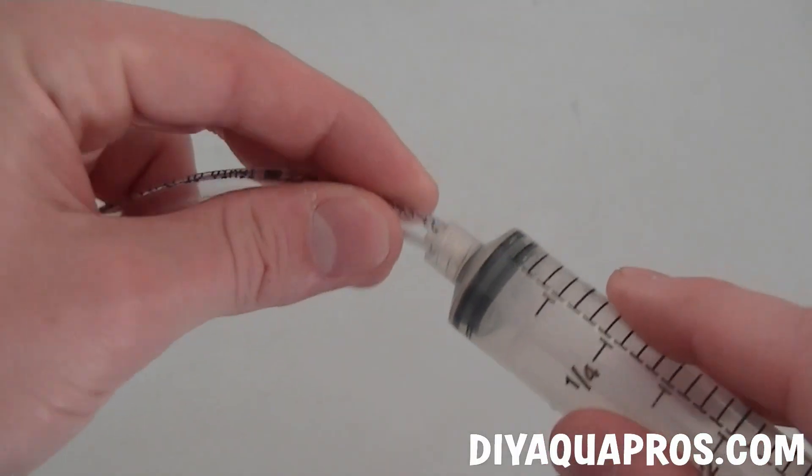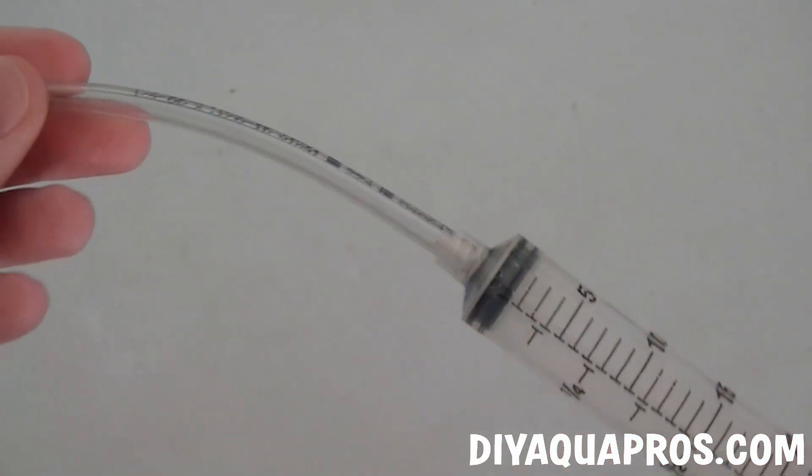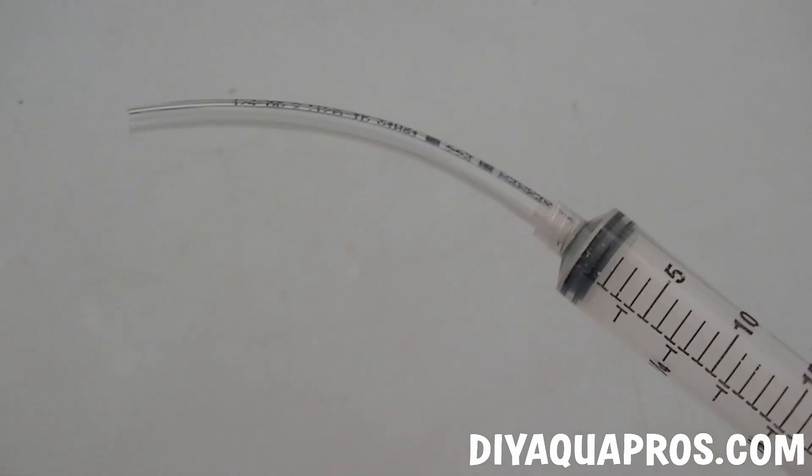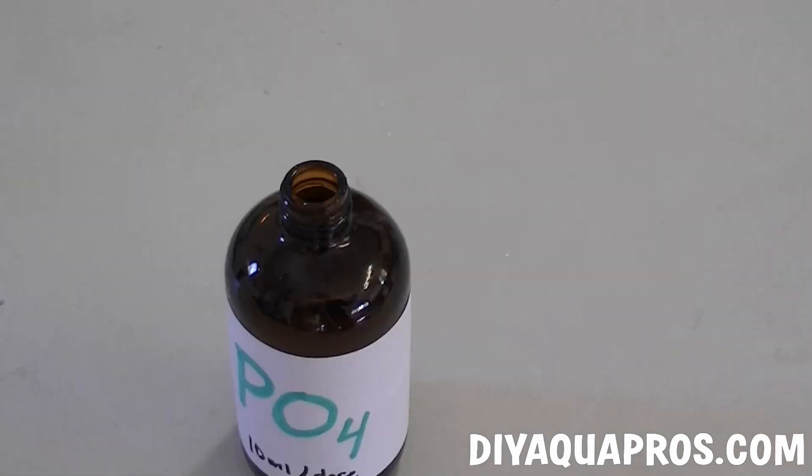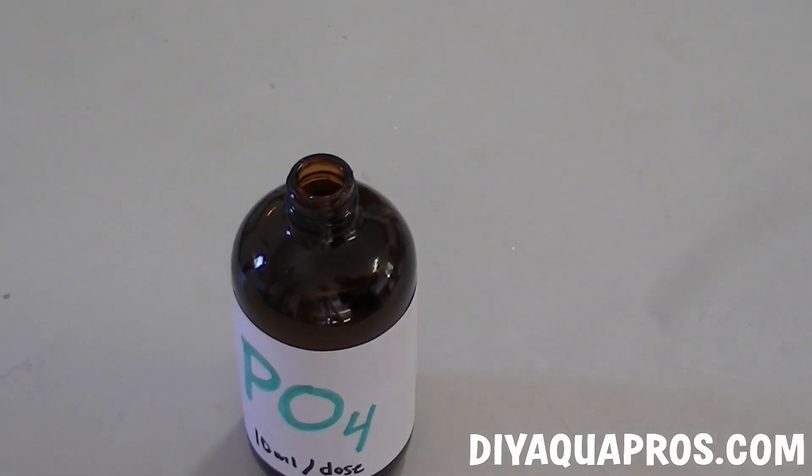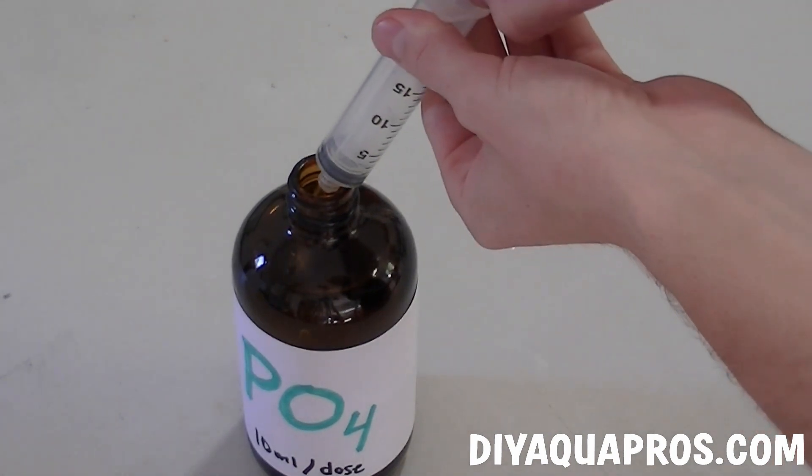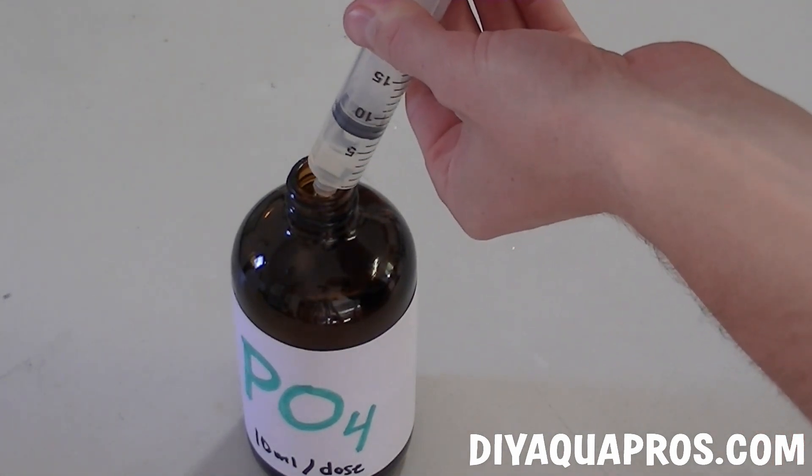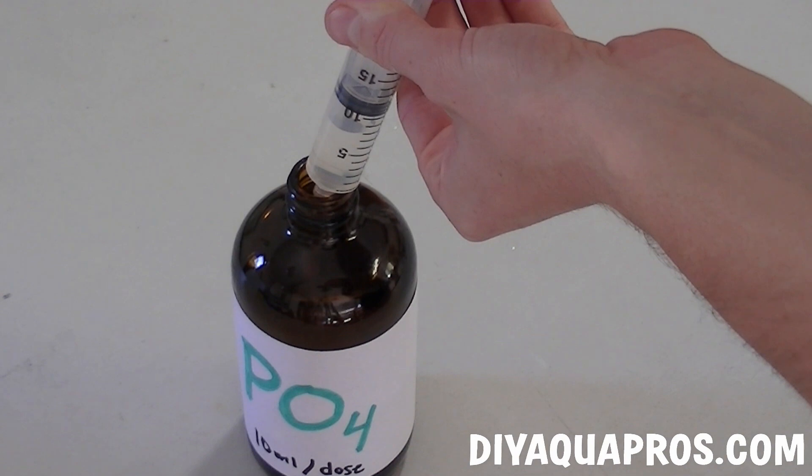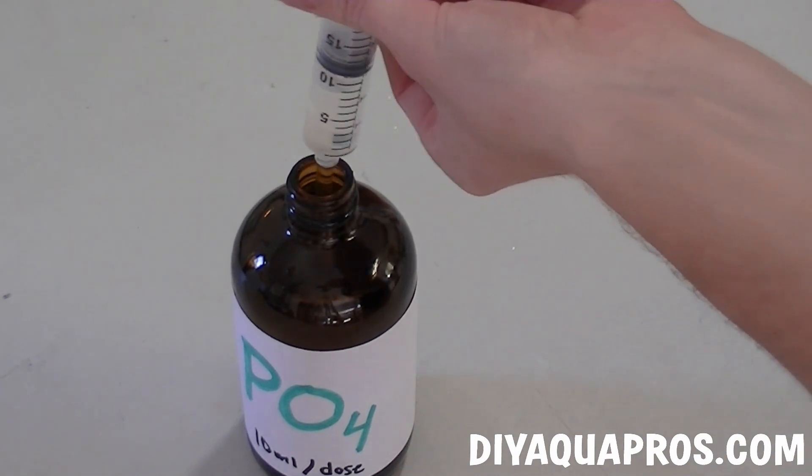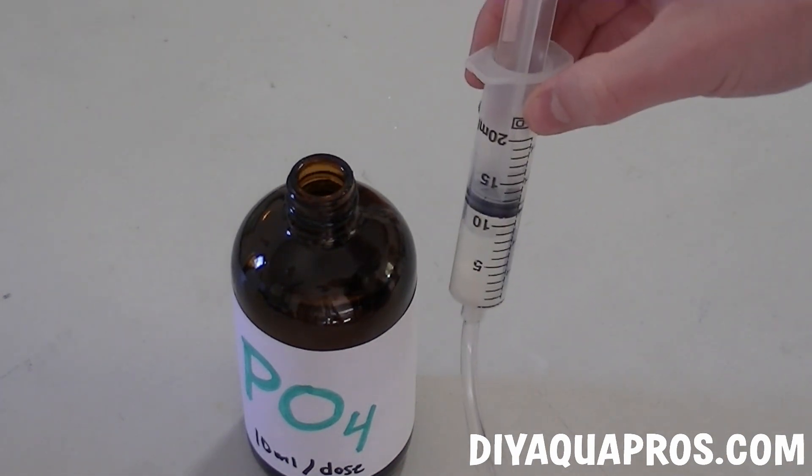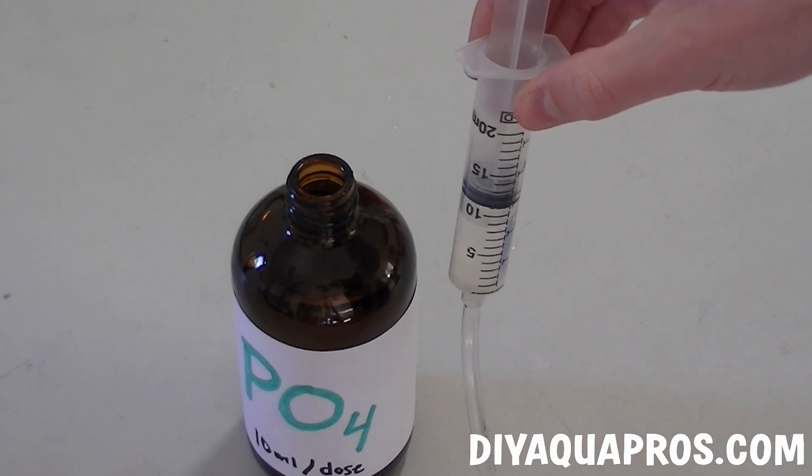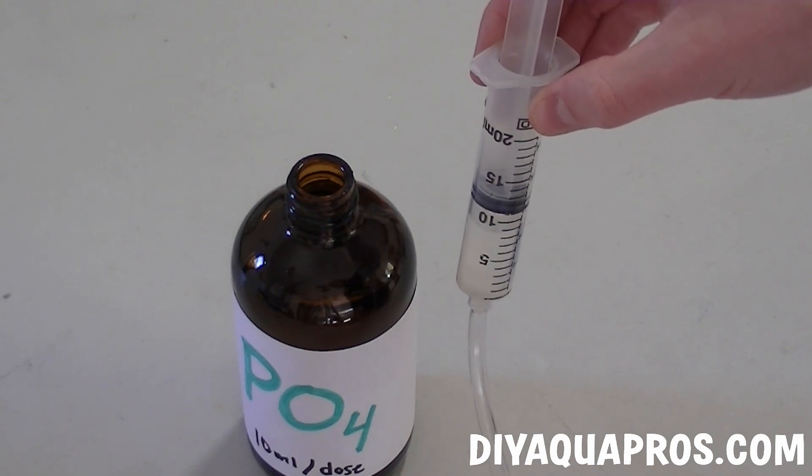When you're ready to dose your aquarium, attach a piece of vinyl tubing. The 4 inch piece we're using will account for roughly 1 mil of solution. So when we go to extract each dose, we want to pull the plunger on the syringe back to where the liquid will reach the 9 mil mark. This will account for a full 10 mils because 1 mil of solution is in that vinyl tubing. And now you're ready to dose your aquarium with a concentration of 2 milligrams per liter phosphate.